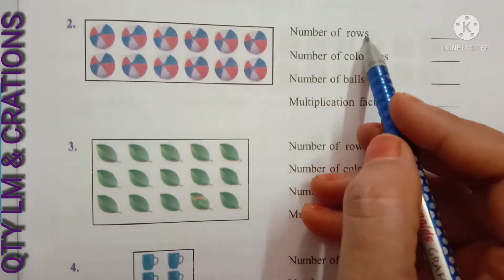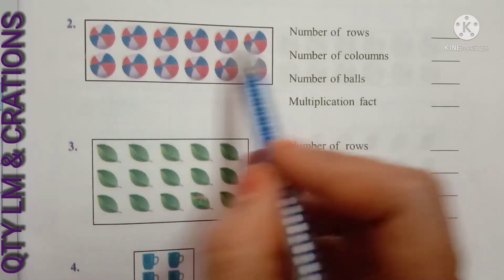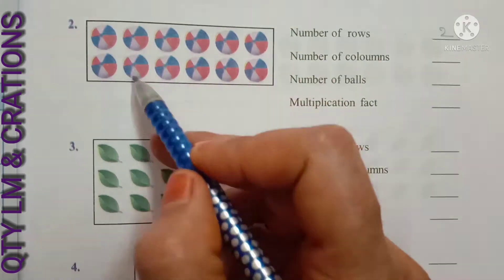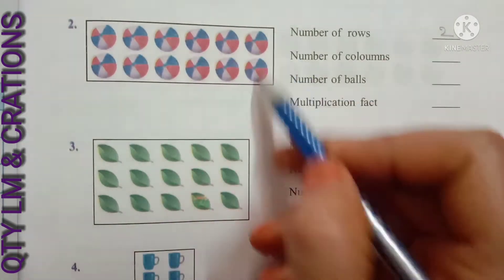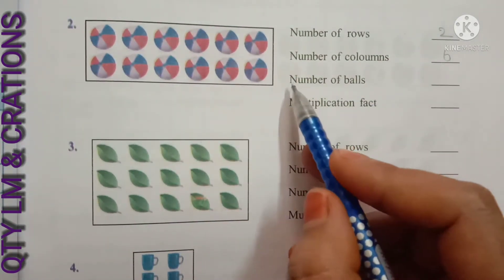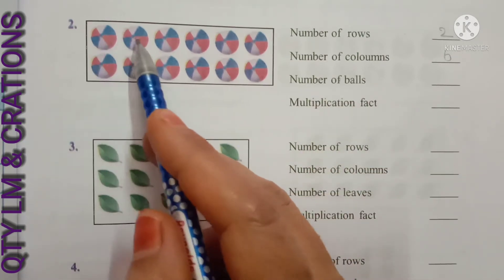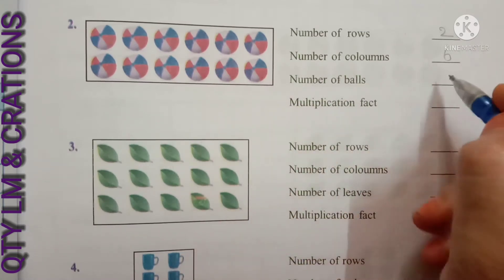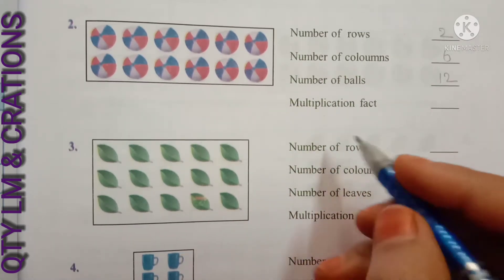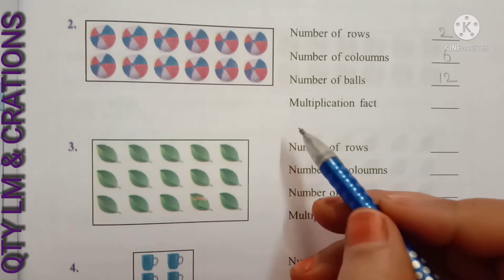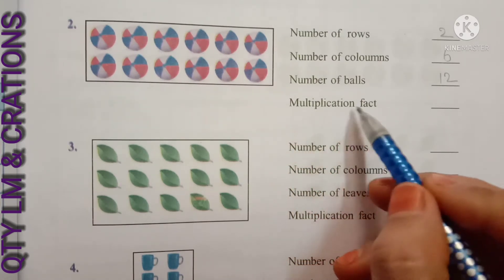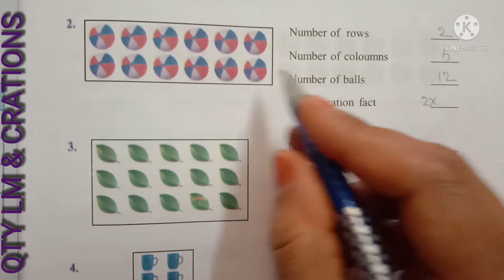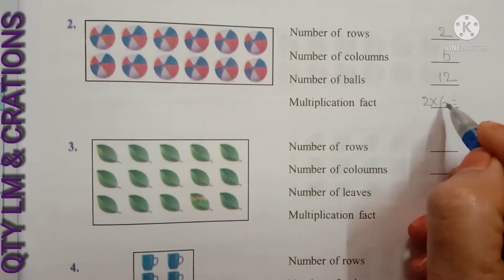Next question: number of rows — one, two — two rows. Number of columns — one, two, three, four, five, six — six columns. Number of balls — counting gives twelve balls in the box.